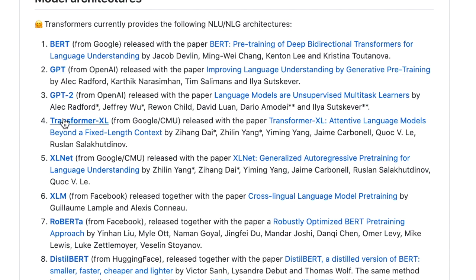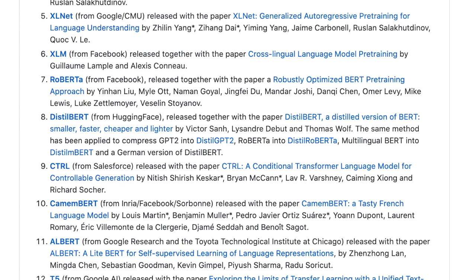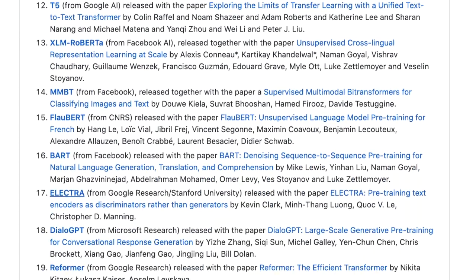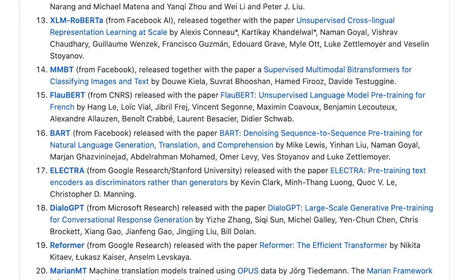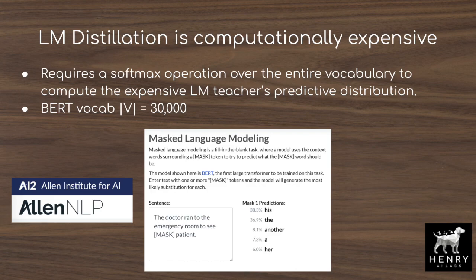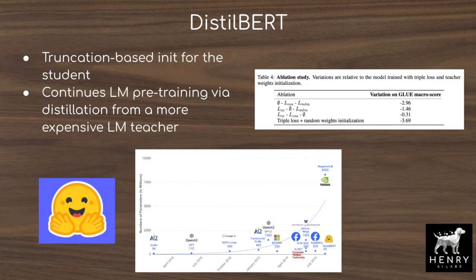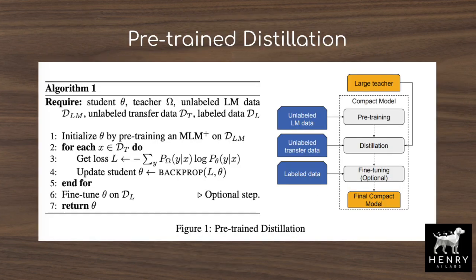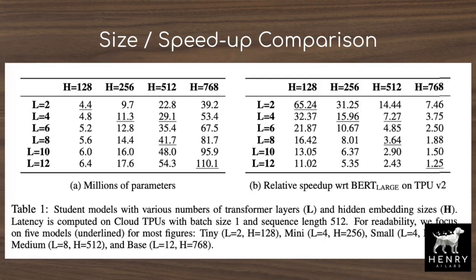However, usually we don't have the resources to use the 11 billion parameter T5 model or the 12-layer 768 dimension BERT base model. To solve this problem, researchers have been looking into using knowledge distillation to construct, say, a six-layer BERT that retains most of the performance, like what's used in DistilBERT. This paper proposes a new way of using knowledge distillation of these off-the-shelf models for training smaller, compact models that fit resource constraints.